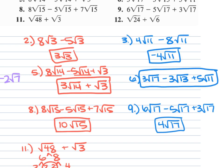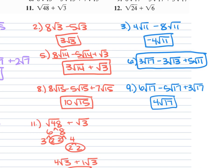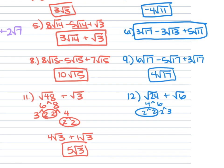Remember, combining is only done when all of the numbers underneath the radical are identical. Problem 12: square root of 24 plus square root of 6. The 24 is 4 times 6; 4 is 2 times 2, and 6 is 2 times 3 — the pair of 2's comes out. So this is 2 square root of 6 plus square root of 6, which is 2 plus 1, giving 3 square root of 6.